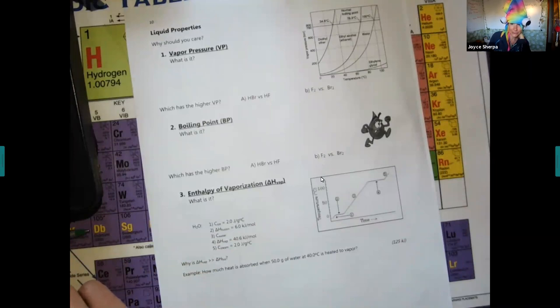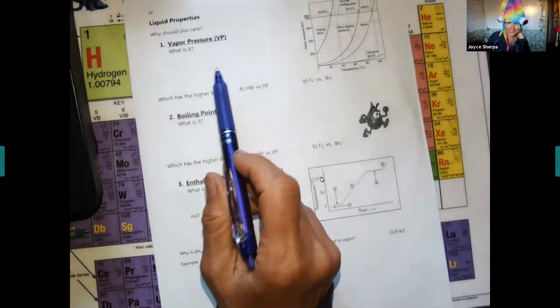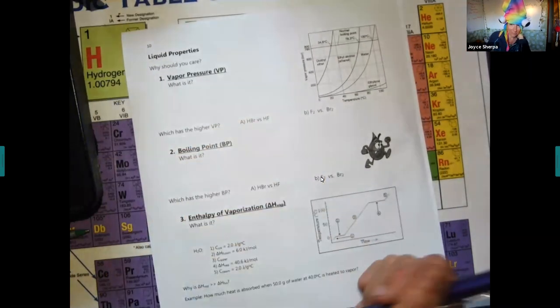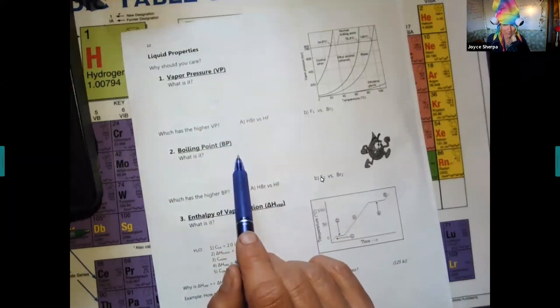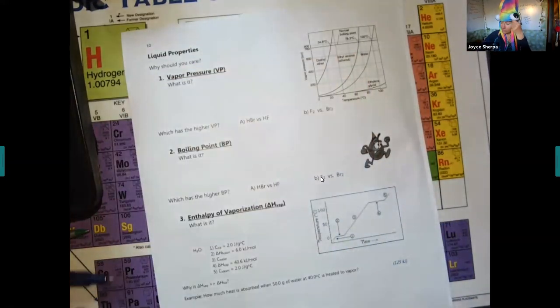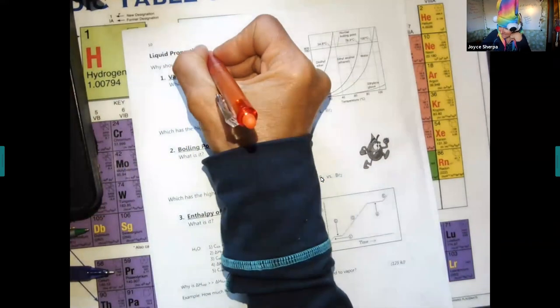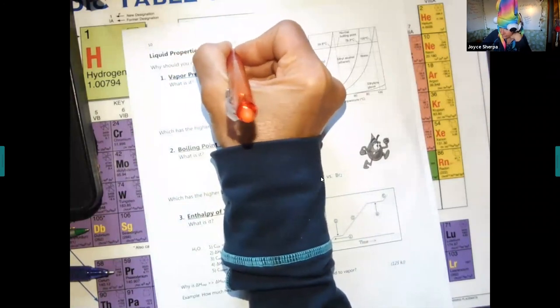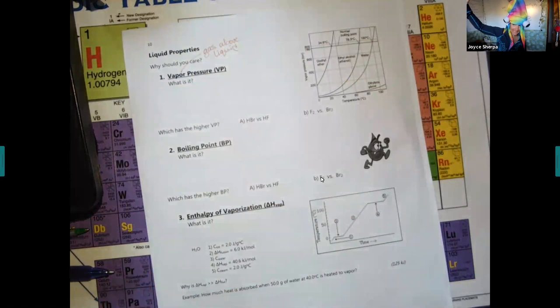Liquid properties. Vapor pressure. You should care because maybe you're going to climb Mount Everest someday and this will be really important. Vapor pressure and boiling point go together. We have to define vapor pressure because it is actually part of the definition of boiling point. The word vapor means when a liquid becomes the gas above a liquid.